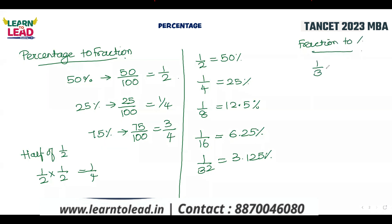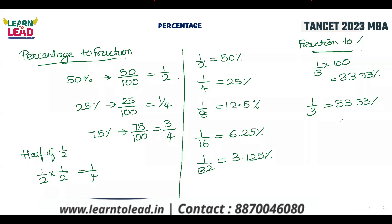Now for the 1 by 3 series — how will you convert into percentage? Divide by 100. One by three: you know that is 33.33%. Can you tell me one by 3 of the number? 33.33%. Then one by three of that is one by six, which is 16.66%.